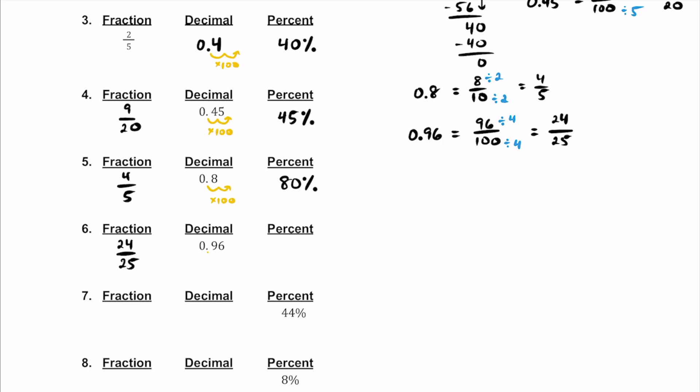To get this to a percent, let's multiply by 100. Move that decimal to the right two times — that's going to be 96%.